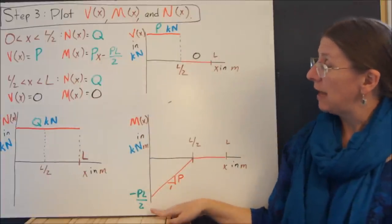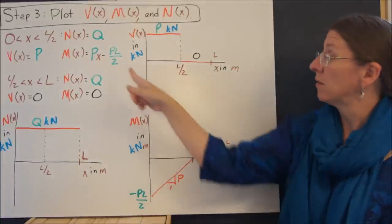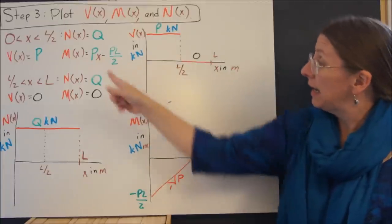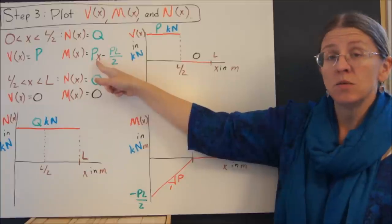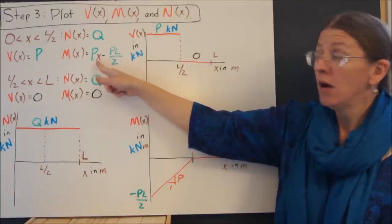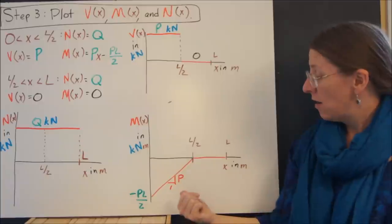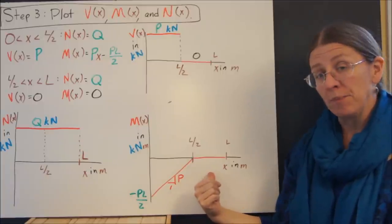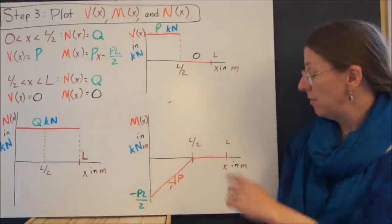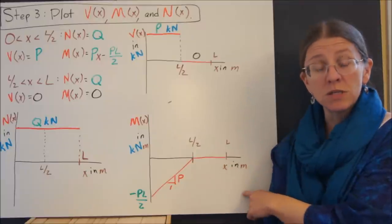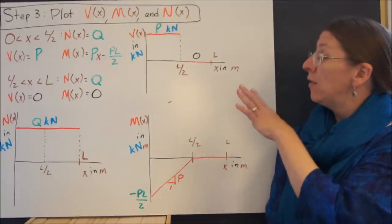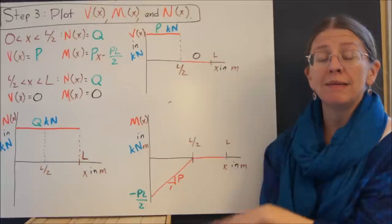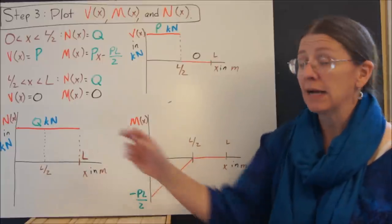M started at negative PL over 2. That was the moment at the wall. And it increases with a slope of P, P over x, for the first part of the beam. For the second part of the beam, M was uniquely equal to zero. These are the shear and bending moment diagrams for that beam and the axial load diagram.